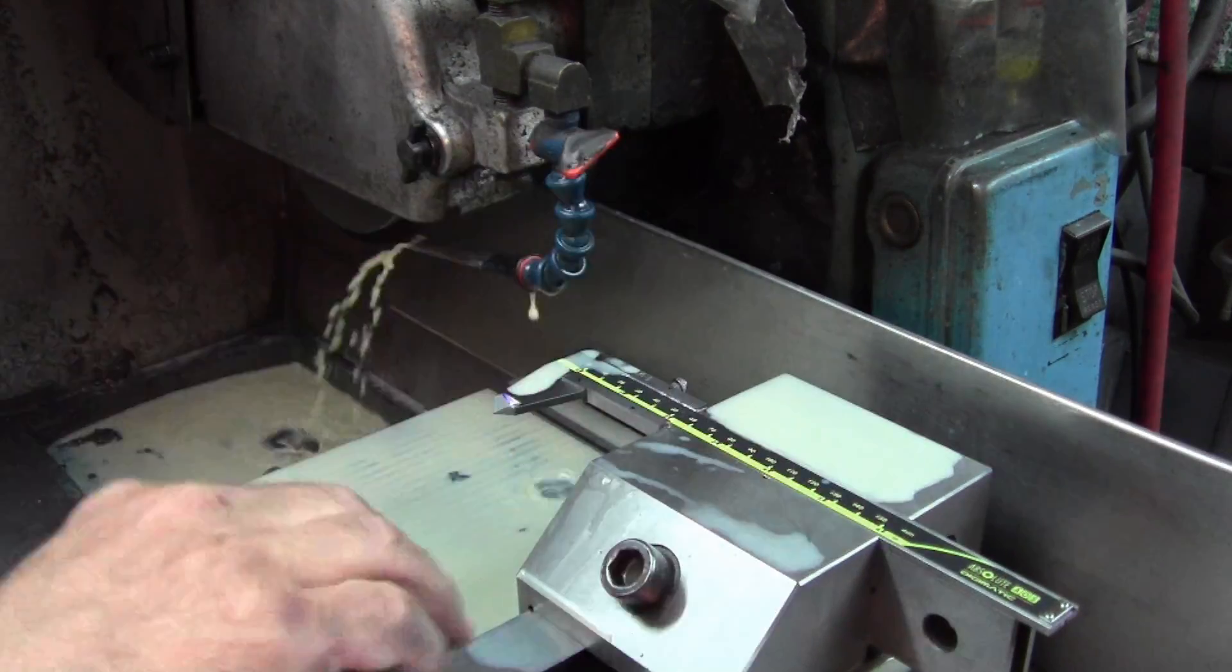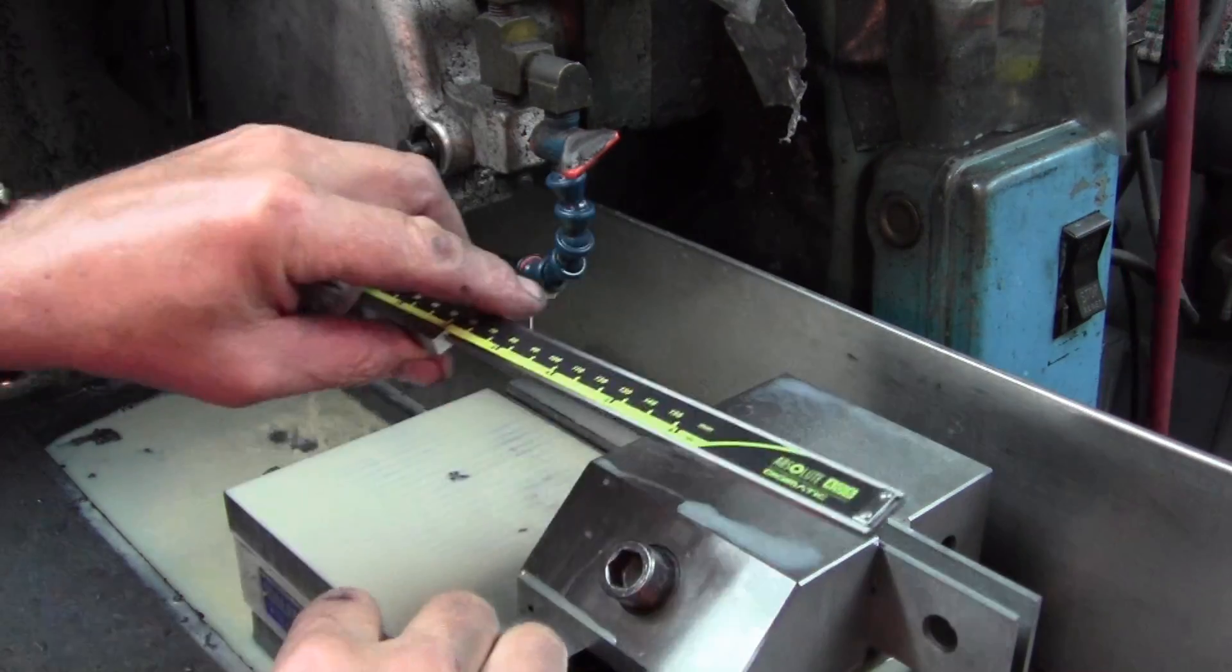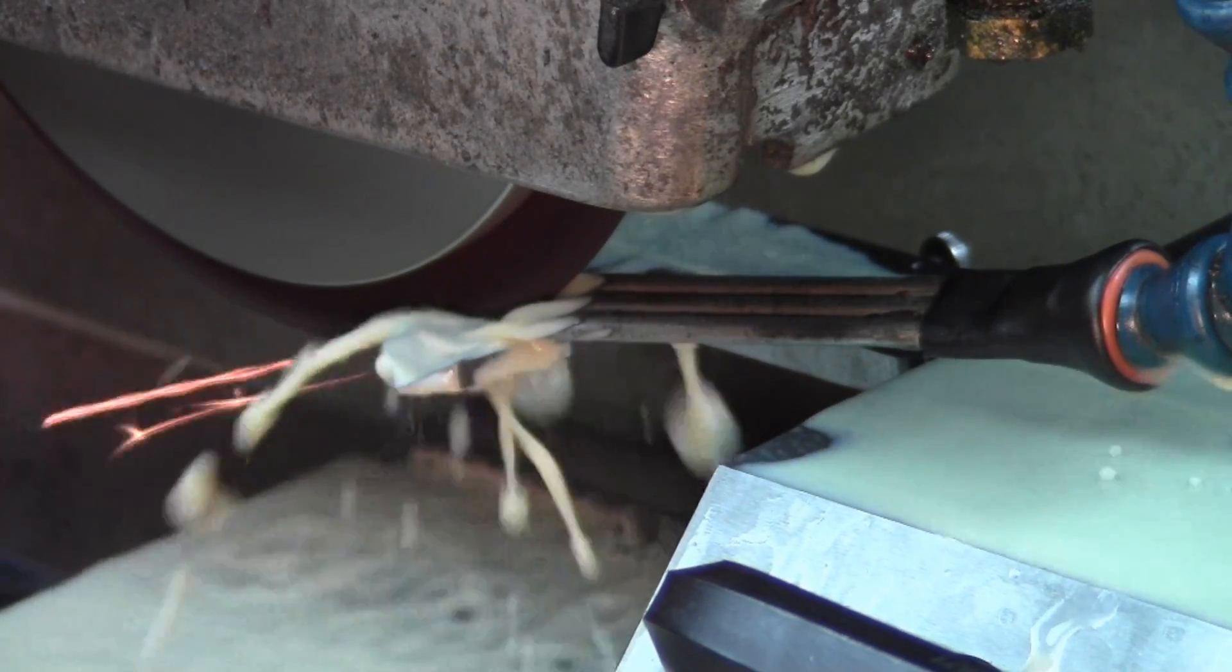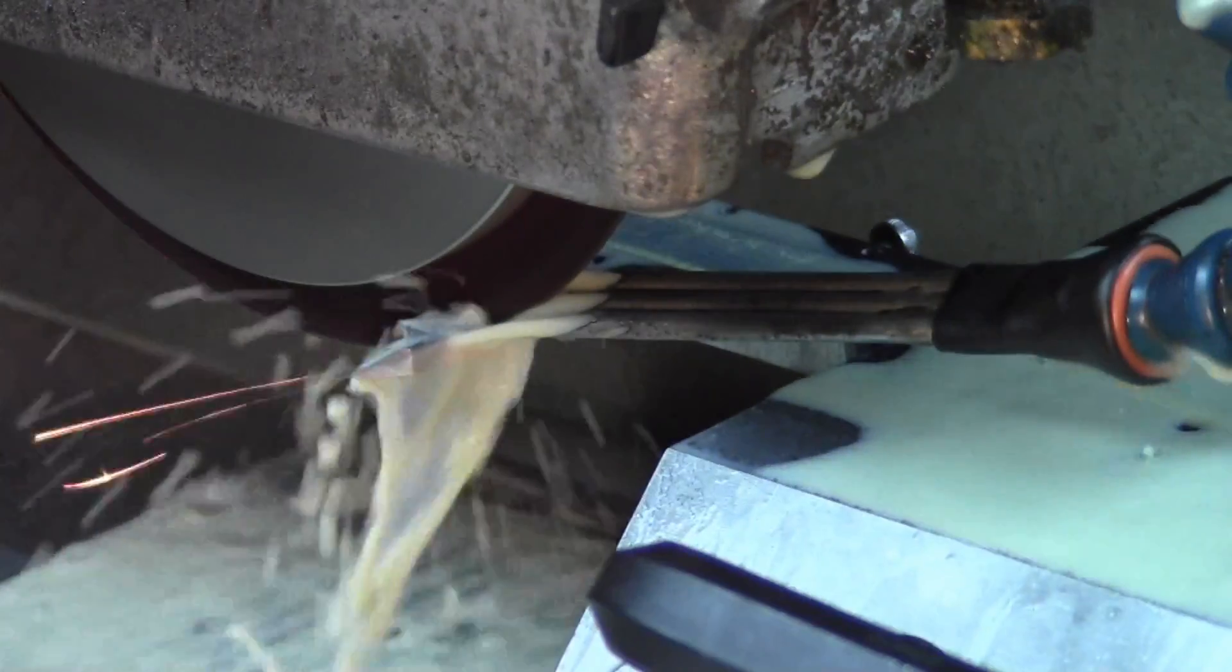Here we're cutting off the original ID jaws of the caliper. Since these are dedicated calipers, those would just be in the way.